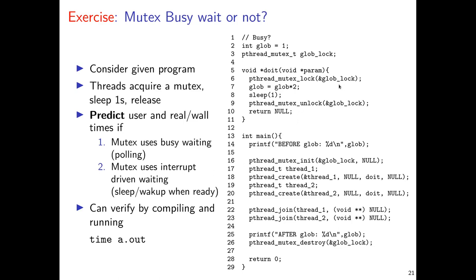In busy waiting, the thread that doesn't have the lock constantly checks whether it is available, implemented in a tight loop — either in the OS or in user space. Since we think of mutex lock as a system call, the OS is acting on this behalf, and a busy lock would consume quite a bit of CPU. The alternative is an interrupt-driven approach: the kernel determines another entity holds the mutex, puts this thread to sleep, and only puts it back in the run queue once the lock becomes available.